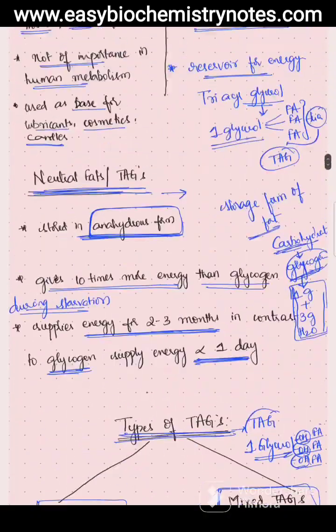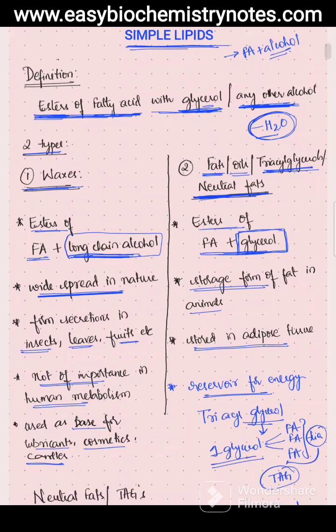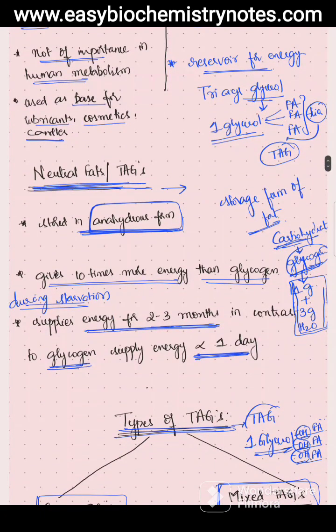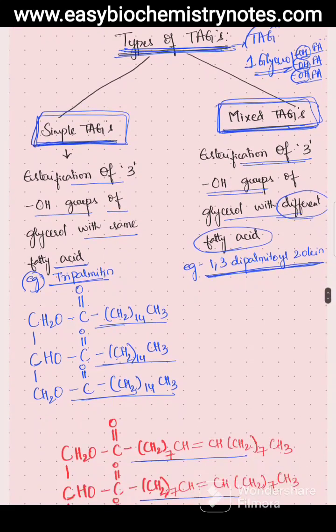In summary, simple lipids are esters of fatty acids with glycerol or any other alcohol. They are of two types: waxes, and fats or oils or neutral fats. The main storage form of fat in animals is triacylglycerol, stored in adipose tissue. Triacylglycerols are further classified into simple and mixed types based on whether the same or different fatty acids are attached to the glycerol. Thank you.